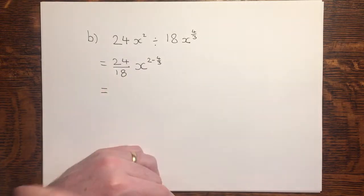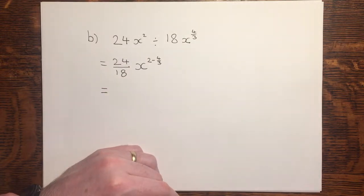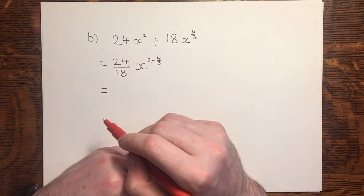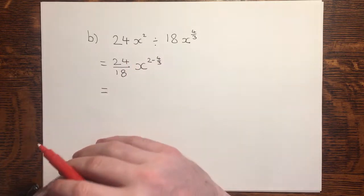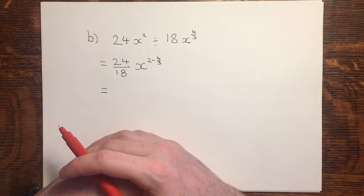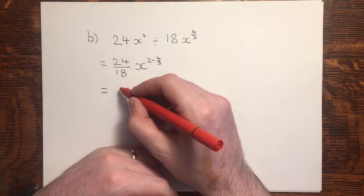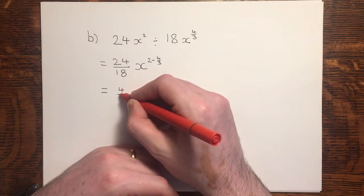This, however, is not in the simplest form, and the question asks us to simplify, so I'm going to fully simplify. 24 divided by 18, well, that's written in the fractional form, and since both 24 and 18 are multiples of 6, I can divide both top and bottom by 6 to get 4 over 3.